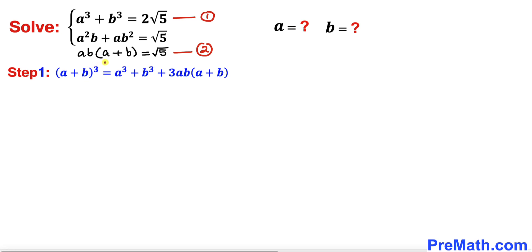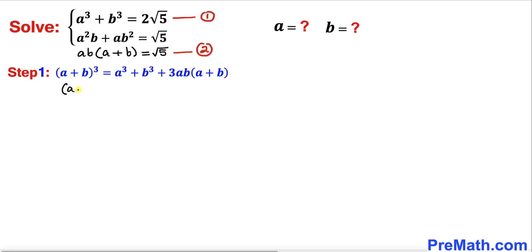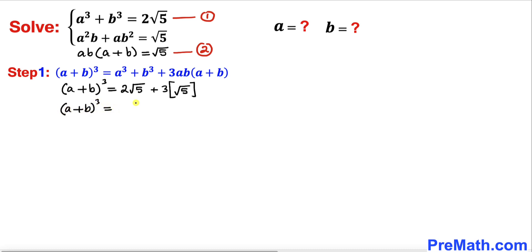Now let's recall this famous identity: (a + b)³ = a³ + b³ + 3ab(a + b). We can see that a³ + b³ equals 2√5 from equation one, and likewise ab(a + b) equals √5 from equation two. So therefore we can write (a + b)³ = 2√5 + 3 × √5, which gives us 5√5 on the right hand side.